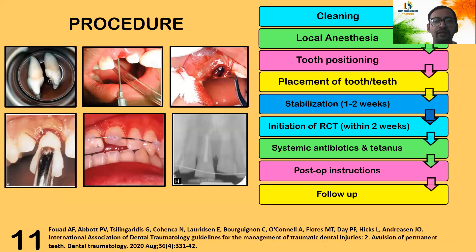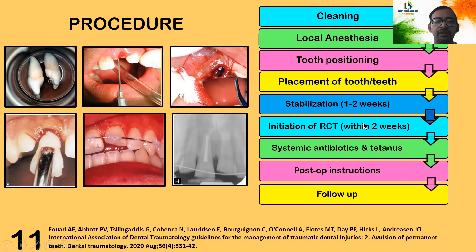The replantation procedure involves cleaning the tooth surface — if any sand or impurities are attached to the root surface, clean them under tap water or with saline. Give local anesthesia if required, remove any foreign objects from the socket, and then reimplant the tooth into its position. Once the tooth is in position, perform flexible splinting, stabilized for one to two weeks. Initiation of root canal treatment is done within two weeks, followed by antibiotics and tetanus if required. Post-operative instructions and follow-up are needed to monitor for ankylosis or resorption.